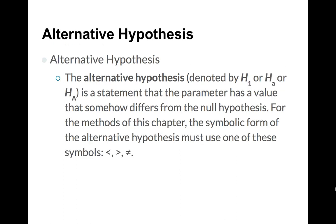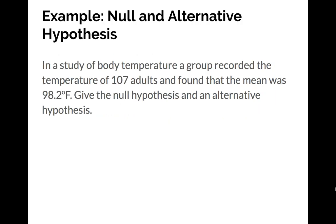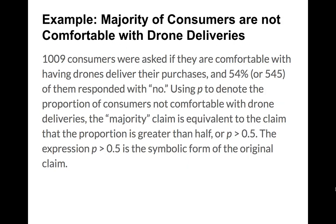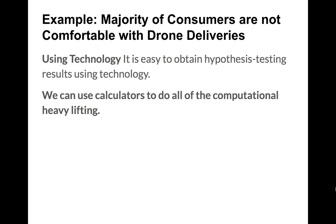The alternative hypothesis, denoted H1 or Ha, is what we think differs from the null. It is either a less-than, greater-than, or not-equal-to statement. This is the actual claim being tested. For our drone example: the null hypothesis is p equals 0.5, and the alternative hypothesis is p greater than 0.5.